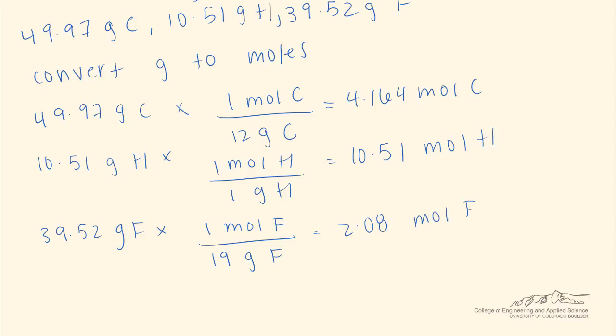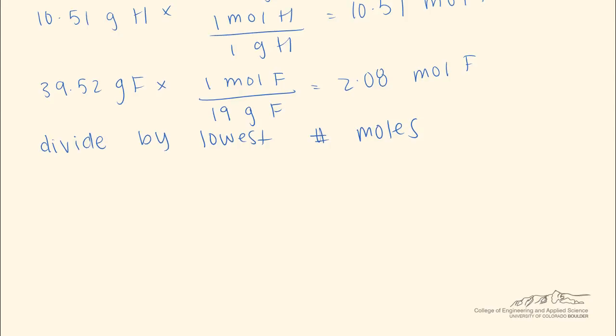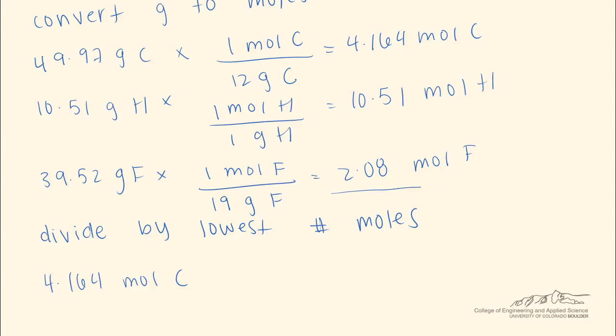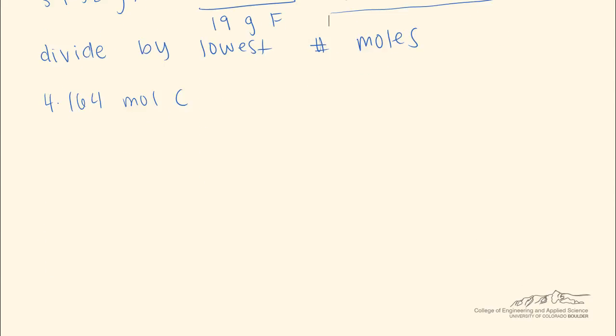The next step is we're going to divide each of these by the lowest number of moles we have calculated to create ratios. So for example, we can take our 4.164 moles of carbon that we calculated, and the lowest number of moles is 2.08 moles of fluorine. So we can divide by 2.08 moles of fluorine to get that we have about 2 moles of carbon for every mole of fluorine. In a similar way,